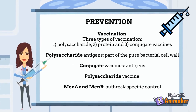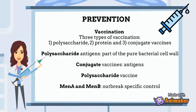The most effective way to prevent meningococcal disease is through vaccinations, which provide long-lasting protection and aid in a population's herd immunity. There are three different types of vaccinations: polysaccharide, protein, and conjugate vaccines, which differ depending on their biological mechanisms. Most significant to meningococcal disease are polysaccharide and conjugate vaccines. Polysaccharide vaccinations contain part of the pure bacterial cell wall, whereas conjugate vaccines contain antigens bound to an immunogenic carrier protein, which aids with the body's immune response. Conjugate vaccines can target many different serogroups of the bacteria, whereas polysaccharide vaccines like Men-A or Men-B vaccines are used for outbreak-specific control, as they target one particular serogroup.